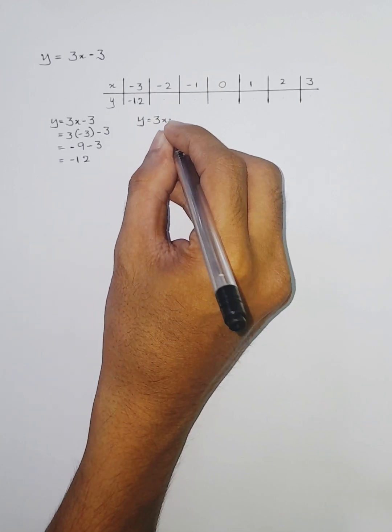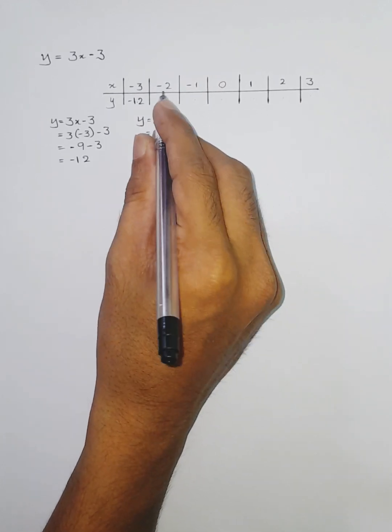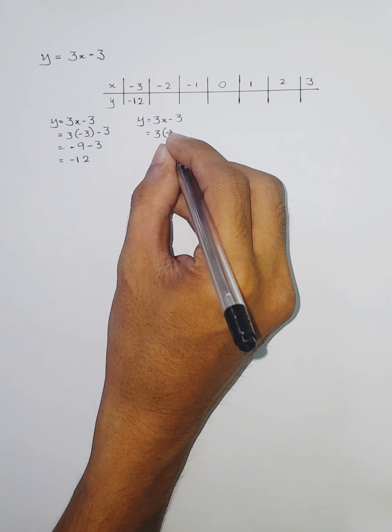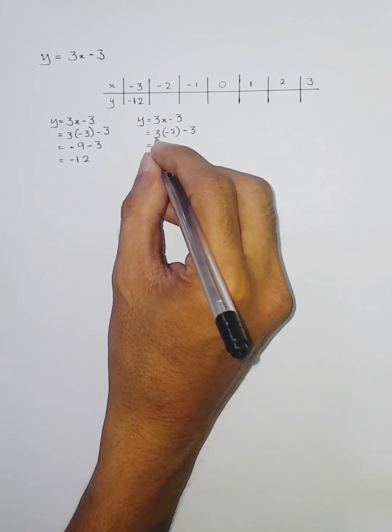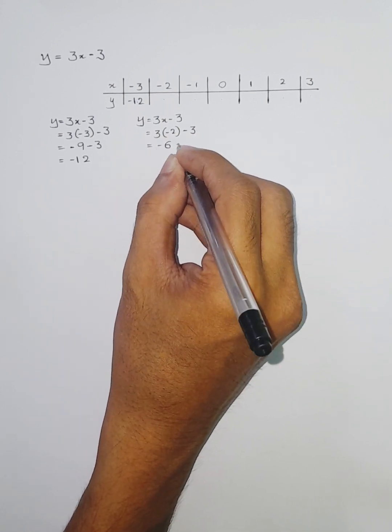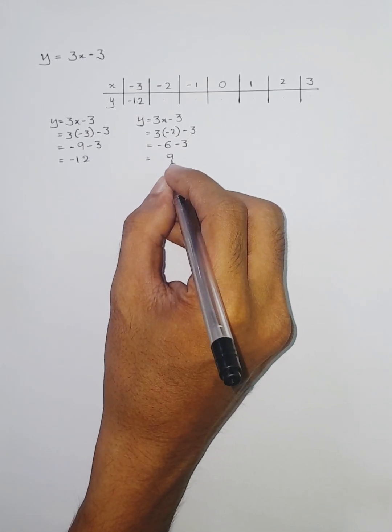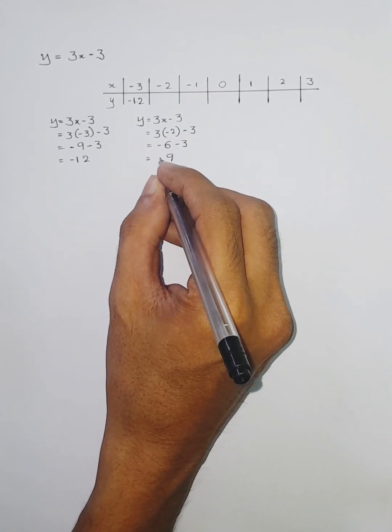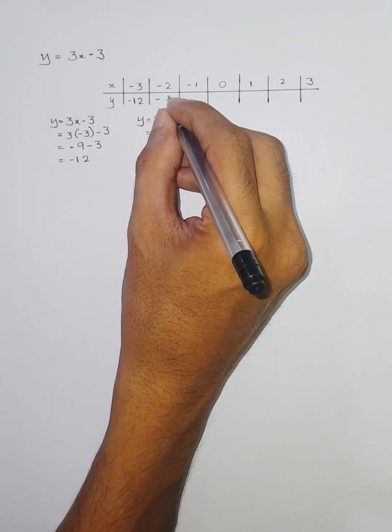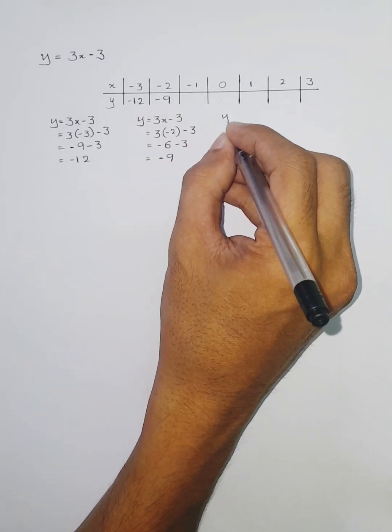y = 3x - 3, and now this time it's -2, so we'll substitute -2 there. So -6 minus 3, the signs are the same, means add, so -9.